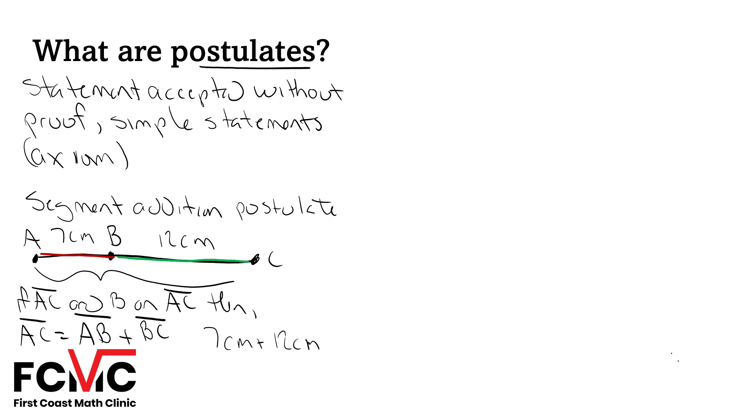plus 12 centimeters, and we're going to get our total length of 19 centimeters, which is the total length of segment AC. So that's our segment addition postulate. It's one of the first postulates we're going to get into. I have another video using the segment addition postulate that you guys can check out.